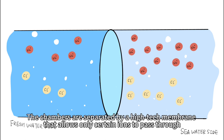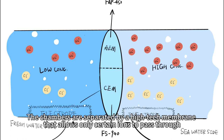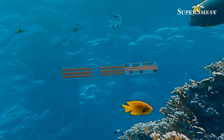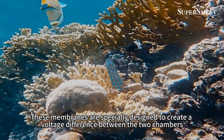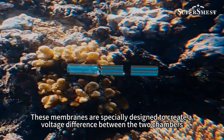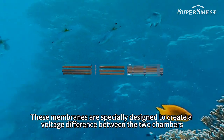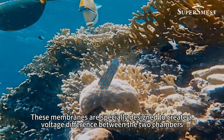The chambers are separated by a high-tech membrane that allows only certain ions to pass through. One membrane is called FAP450, and the other is called FS940. These membranes are specially designed to create a voltage difference between the two chambers.